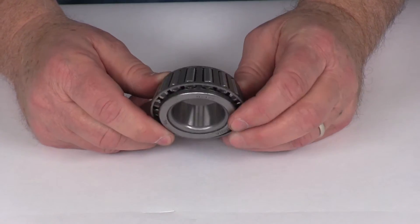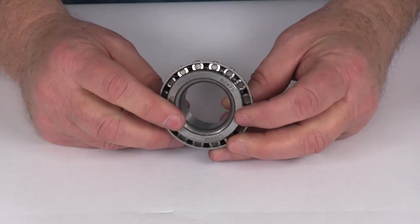That should do it for the review of the replacement trailer hub bearing number 02475.